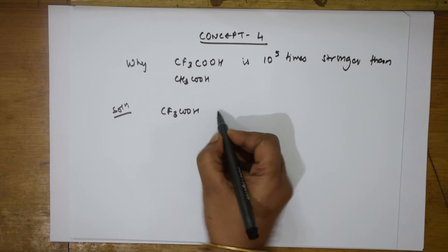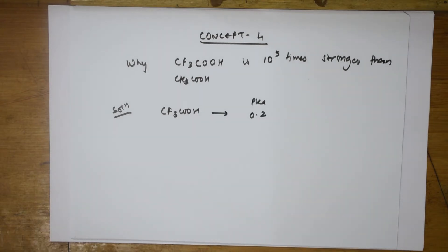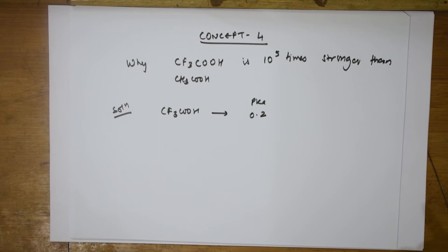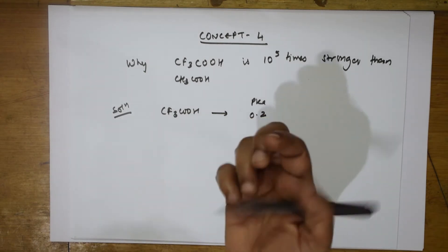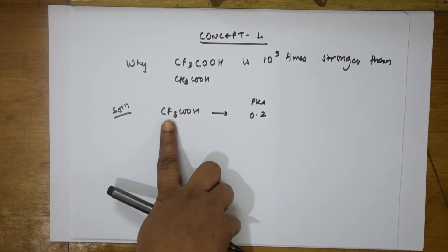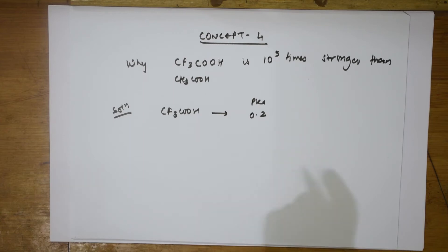CF3COOH has a pKa value of 0.2 — some books give it as 0, but 0.2 is the correct value. That is very very small. Remember: smaller the pKa value, stronger is the acid. That is point number one. Second concept: more electron withdrawing groups means more negative inductive effect (-I effect), and hence higher acidity.